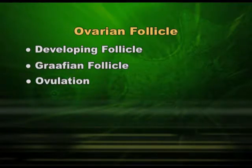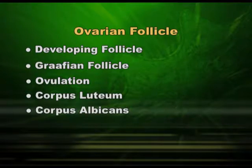The ovarian follicle stages are: developing follicle, ovulation, corpus luteum, and corpus albicans. Once the ovum has come out through ovulation, if sperm is available then fertilization will take place. The life of an ovum in the female body is 48 hours, and the life of sperm in the female body is also 48 hours. The ovum is available on the 14th day, or mid-cycle, of the menstrual cycle.